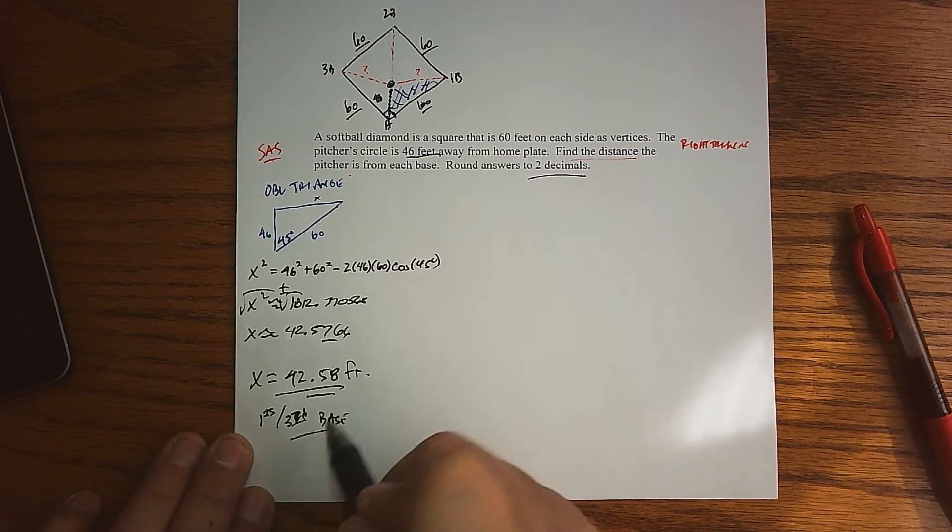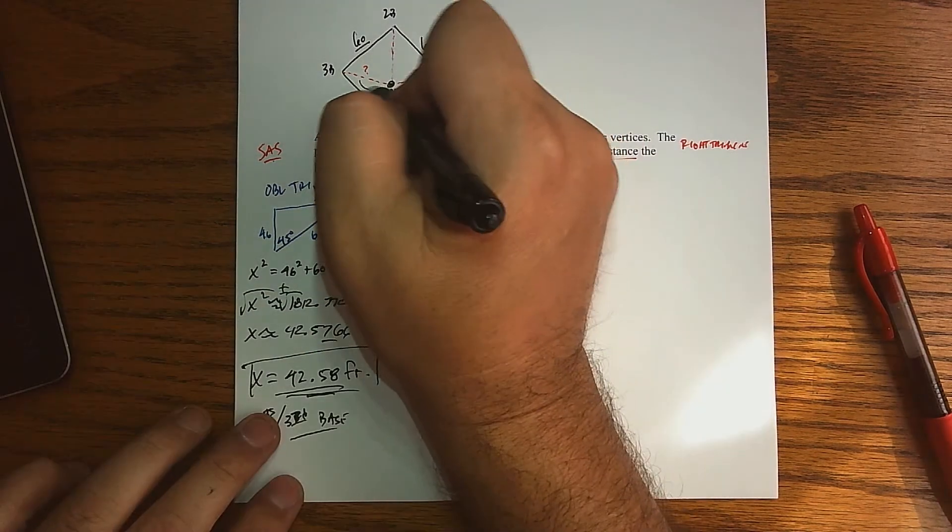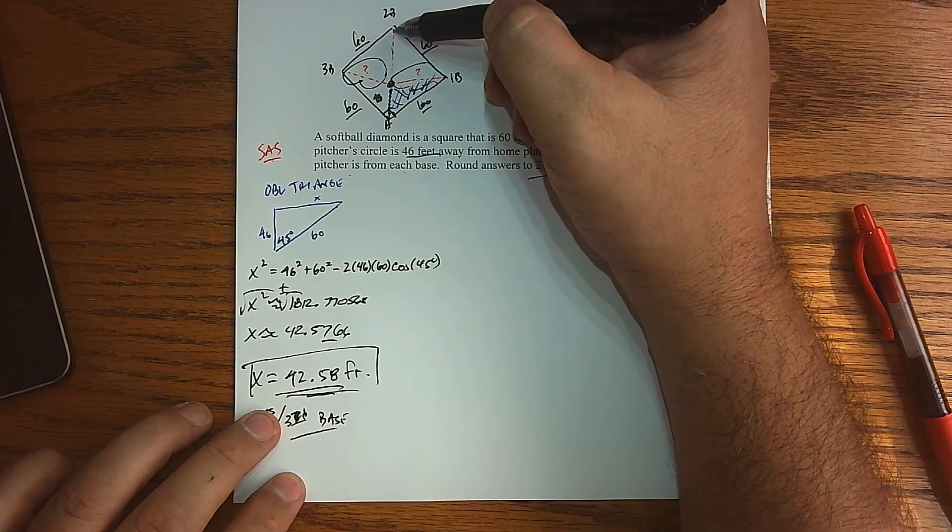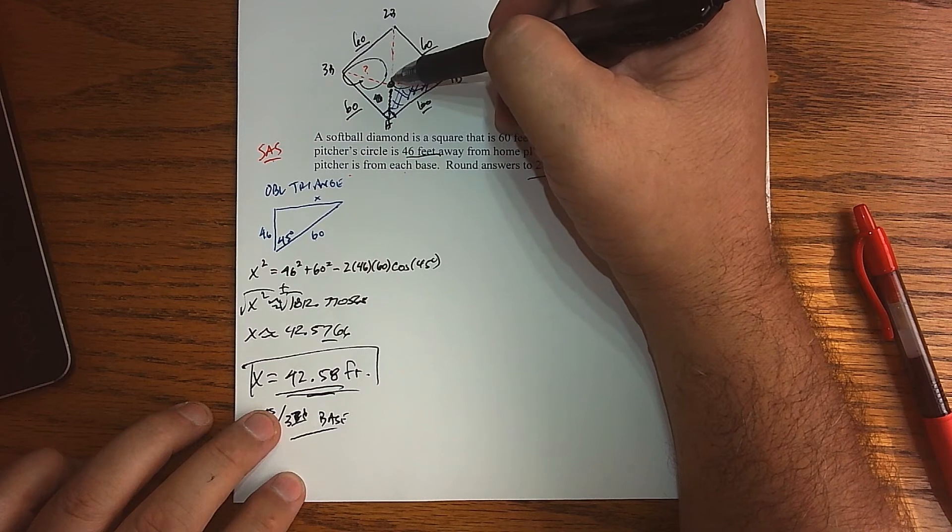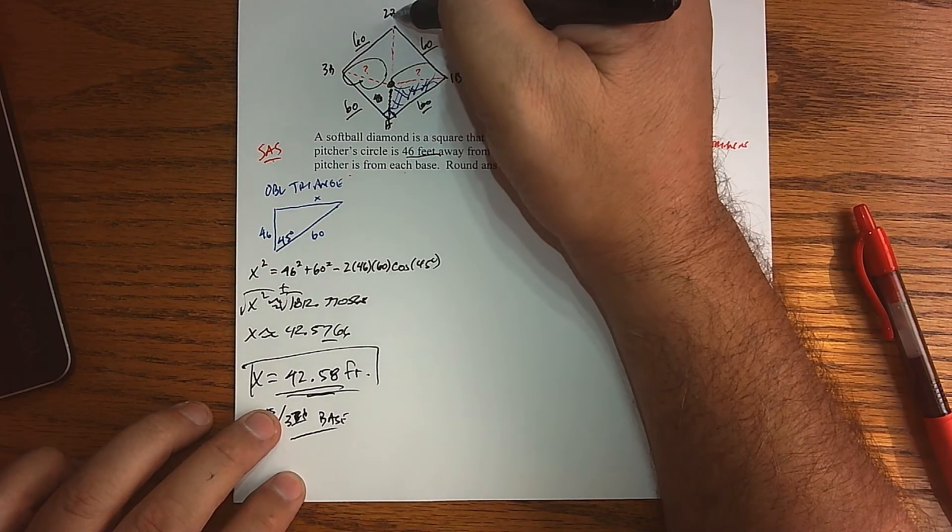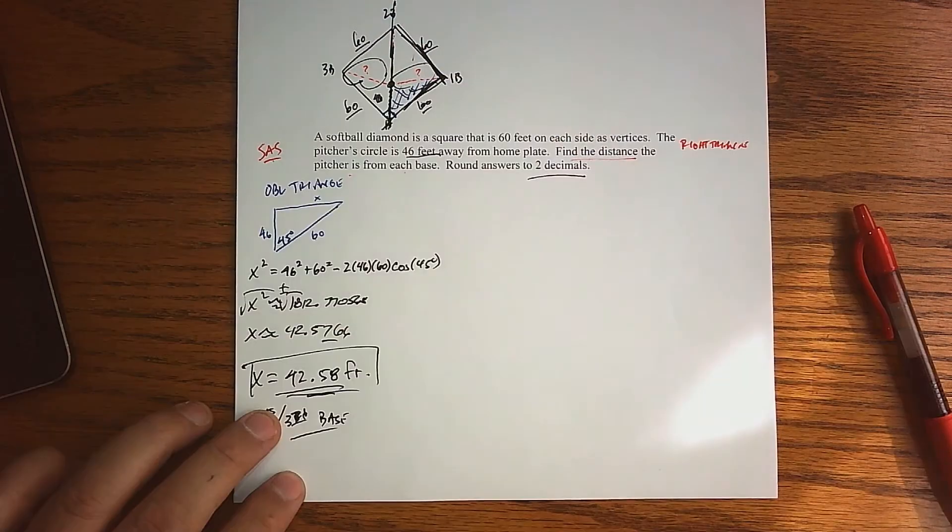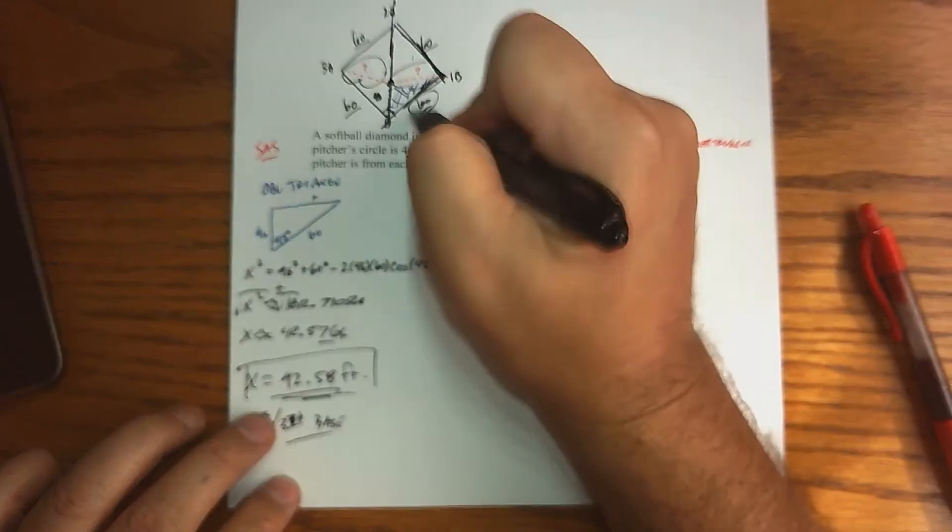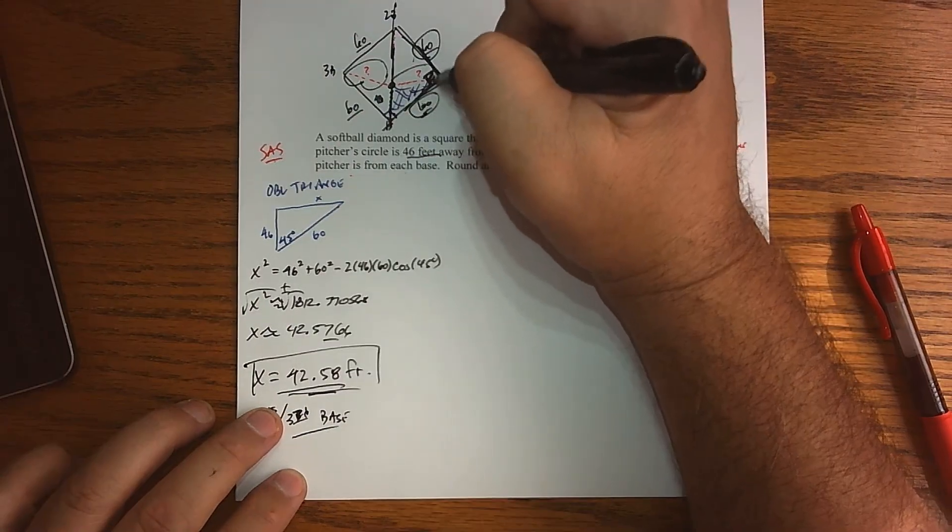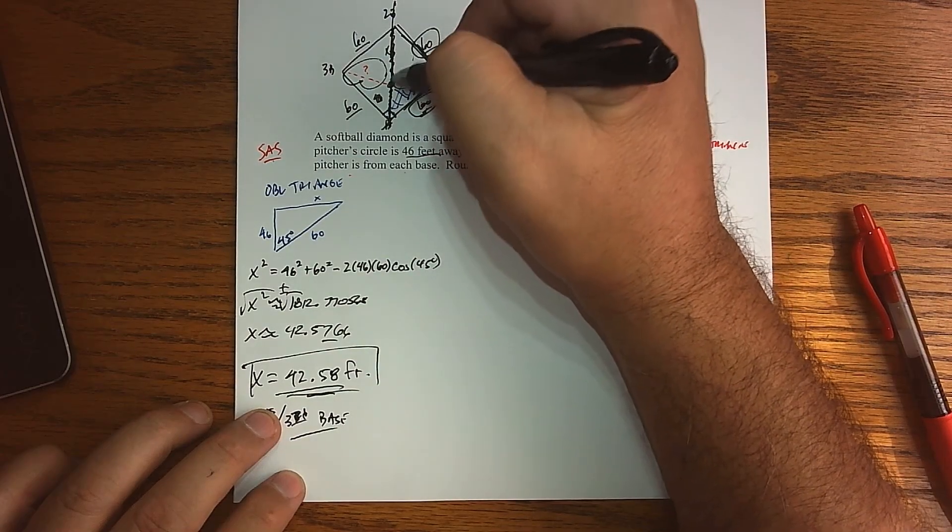Alright, for this situation, we've answered this one and we've answered that one. So what about the distance from second base to the pitcher's mound? If we take a look at this, let me draw it bigger, we basically have this triangle right there, and this side is 60, this side is 60, and that side is a right triangle, so we're basically looking for the hypotenuse.